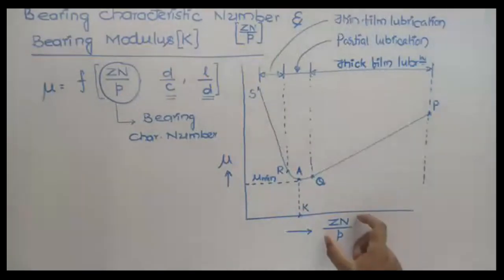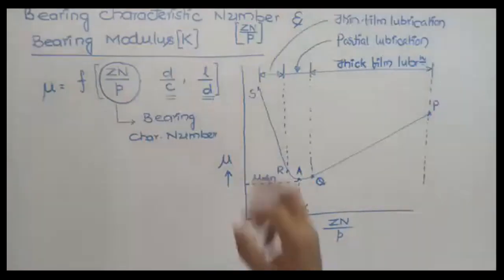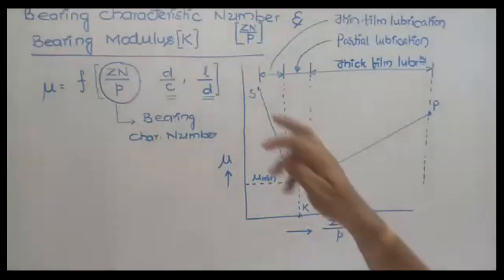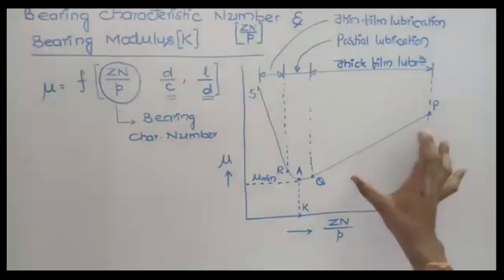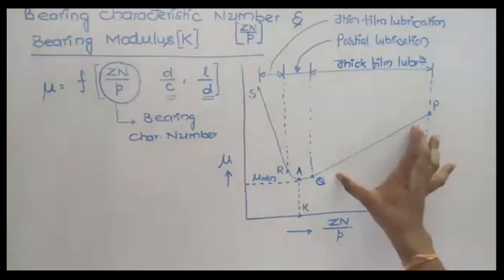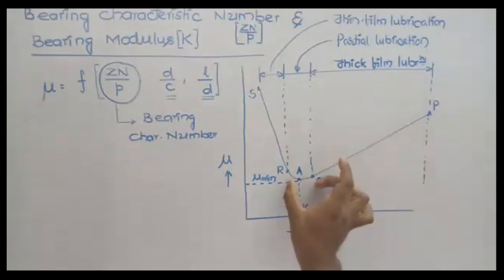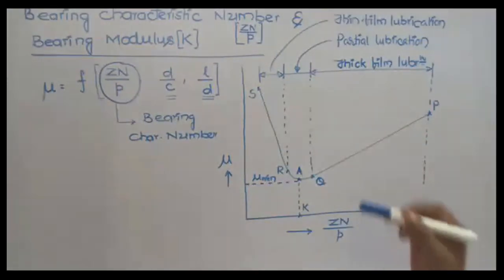By taking zn/p on the x-axis and the coefficient of friction (mu) on the y-axis, if you draw a plot for different values of zn/p, you will get a V-shaped curve with different slopes in different regions. This plot is segmented into three parts: PQ region, QR region, and RS region.